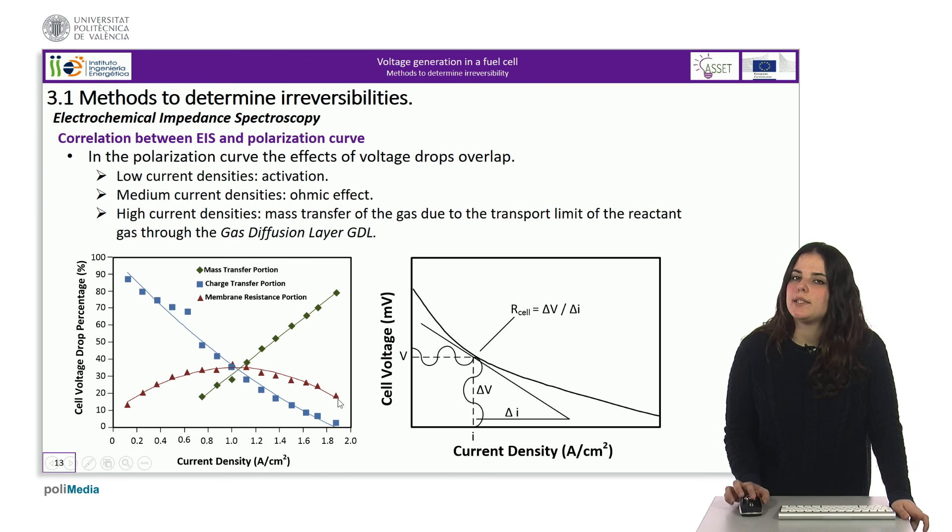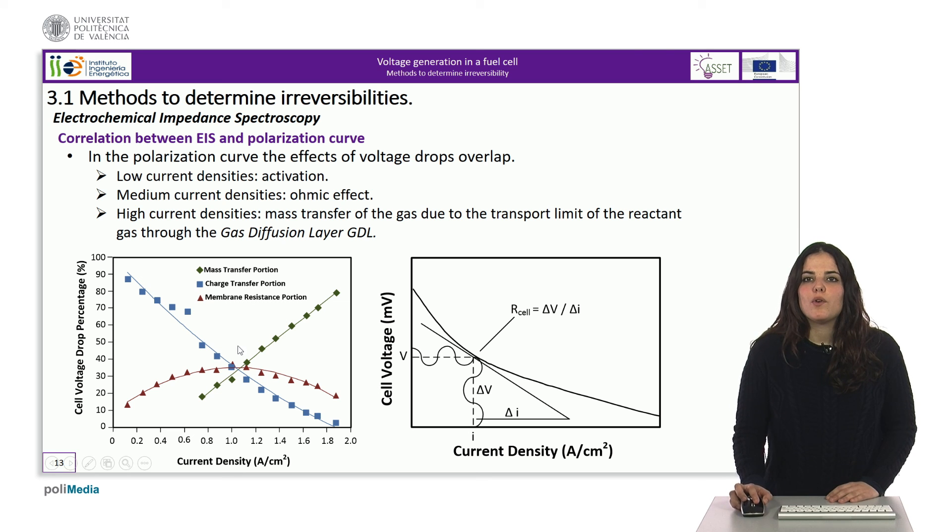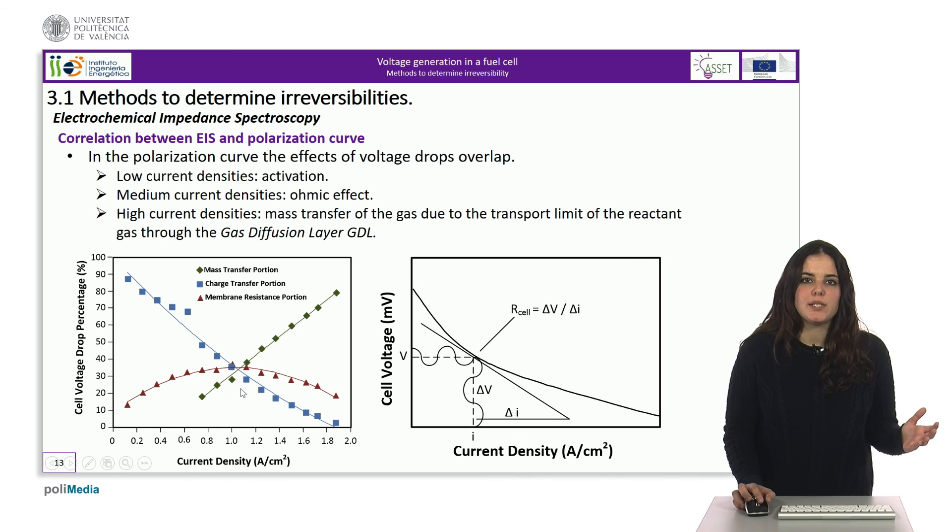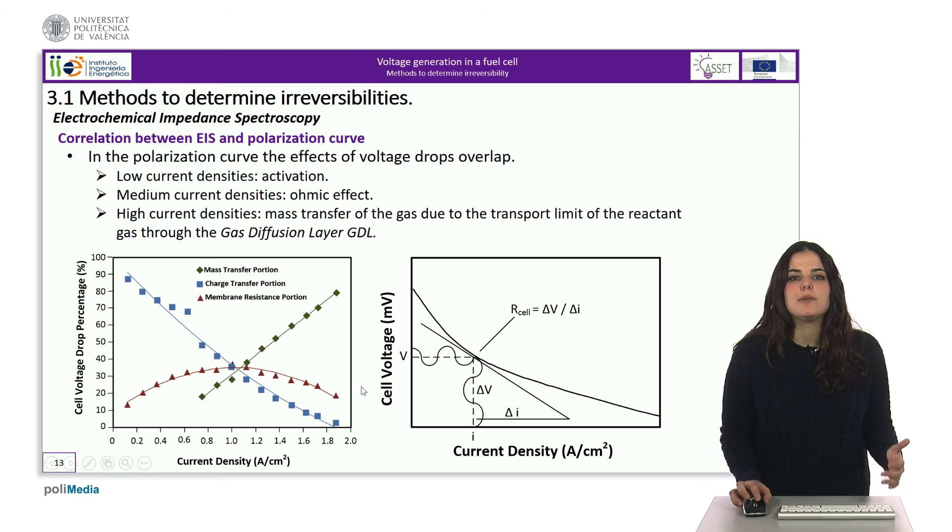For each point of the polarization curve, the test can be performed to determine the percentage of participation of each irreversibility in the voltage drop. As we can see in the figure, for low current densities, the greatest losses are caused by the effect of the activation potential. On the other hand, in the intermediate values, the losses due to the proton resistance of the membrane of a PEM fuel cell have the same weight as the other two phenomena. Finally, at high current densities, it is the concentration losses that contribute a higher percentage of losses, as expected from the deduction made at the beginning of the unit.